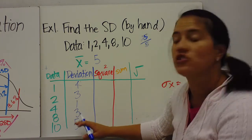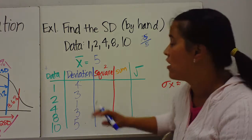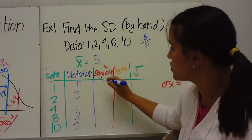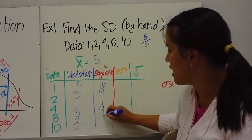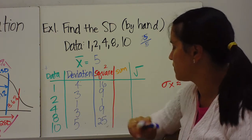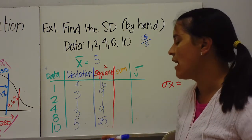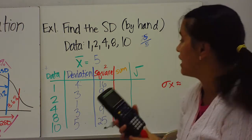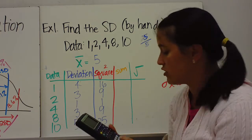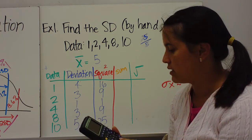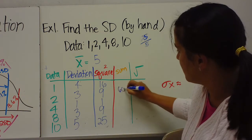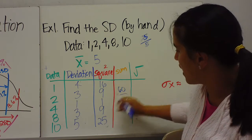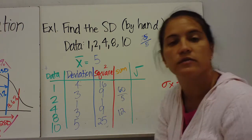Step three: square the deviations. 4² = 16, 3² = 9, 1² = 1, 3² = 9, 5² = 25. Step four: take the average of the squares, so add them up: 16 + 9 + 1 + 9 + 25 = 61, divided by 5 = 12.